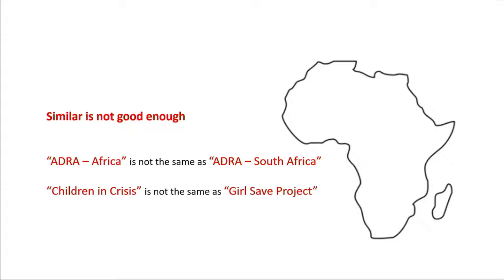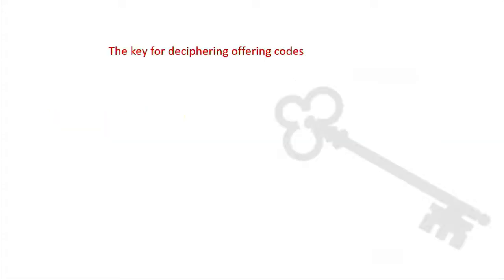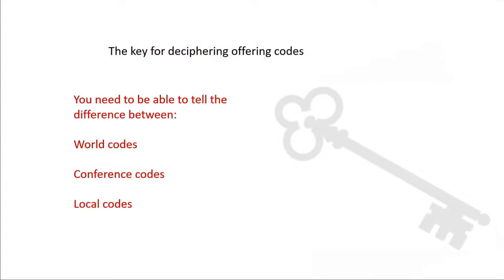Entering a lot of new accounts may seem overwhelming, but with the help of these training videos and our handy Adventist Giving code chart, you can become an expert at spotting new codes and entering them correctly. So let me give you the key for deciphering offering codes, because you're going to need to be able to tell the difference between world codes, conference codes, and local codes.